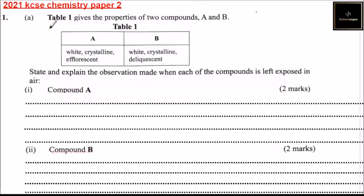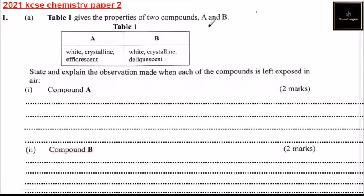This is 2021 KCSE Chemistry Paper 2, Question number 1, Part A. Table 1 gives the properties of two compounds A and B. We have our table here.